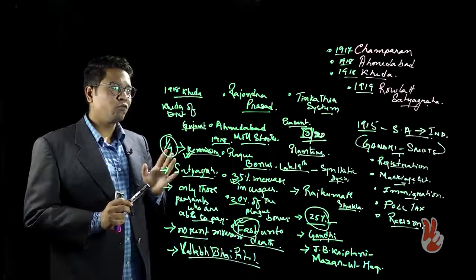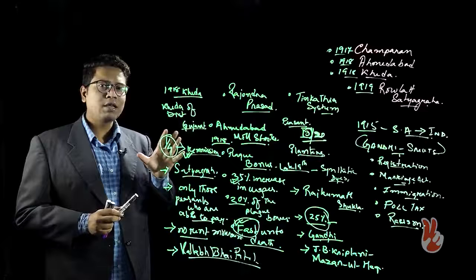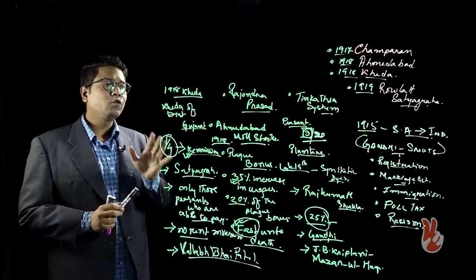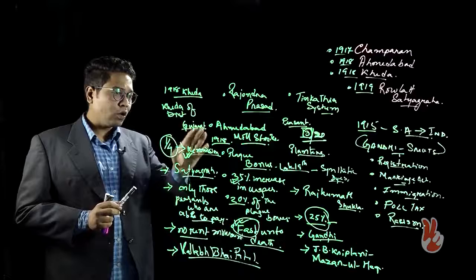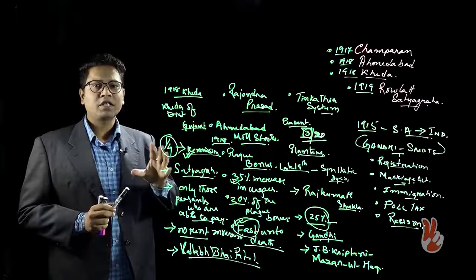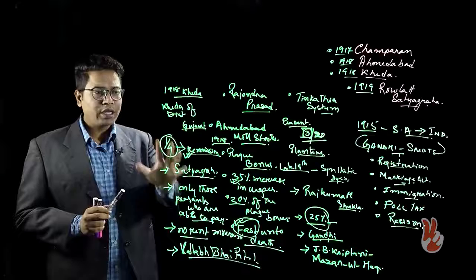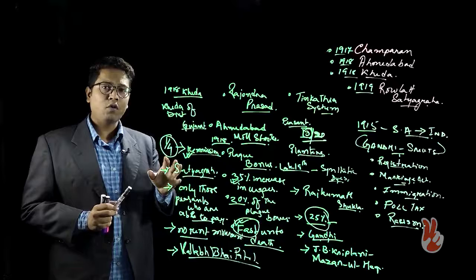These three movements — Champaran, Ahmedabad, and Kheda — were crucial during the formative phase of Gandhi's political career in India. In these three movements, the tools Gandhi would deploy in successive stages of the national movement were tried out: the tool of non-cooperation and civil disobedience, the tool of fasting, and the tool of the no-rent movement. From here we go on to the Rowlatt Satyagraha, which was the first mass-based movement under Gandhi.